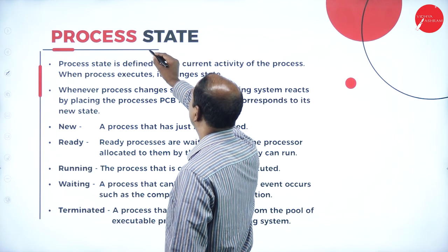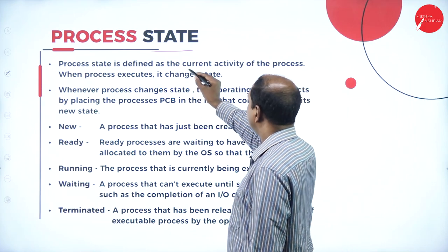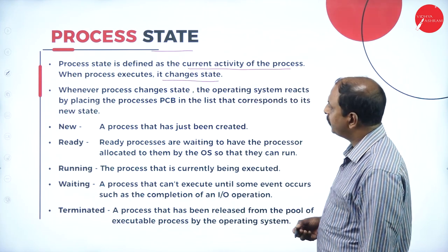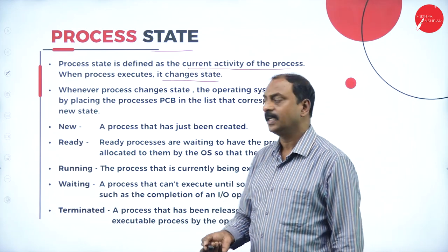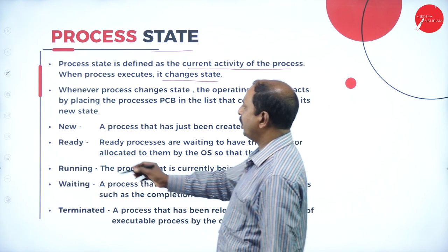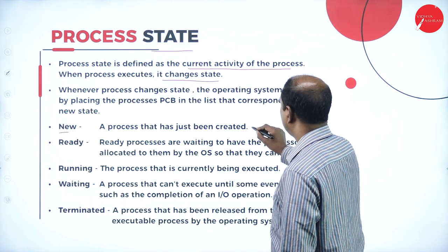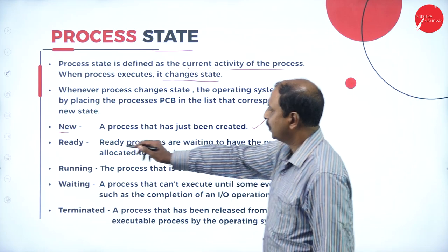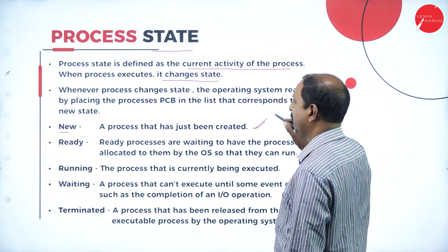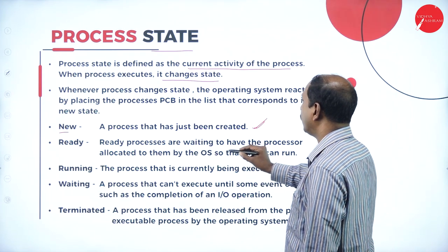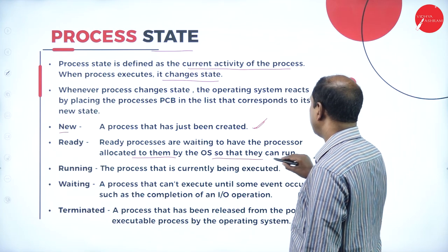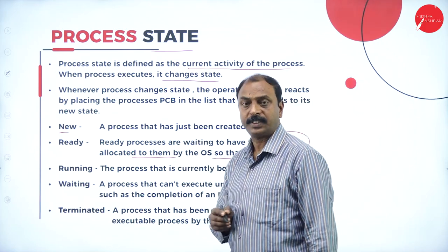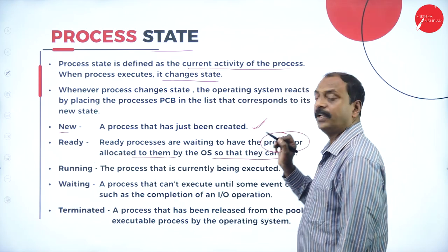In the next slide we will see the different process states. A process state is defined as the current activity of the process — when a process executes, it changes its state. There are different process states. The first is 'new': the process has just been created. The second is 'ready': the ready processes are waiting to have the processor allocated to them by the OS so that they can run — it is a process waiting for processor time.